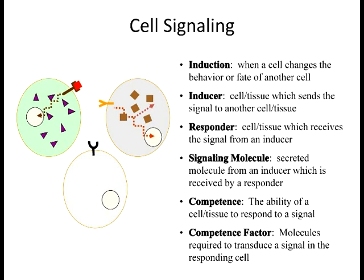Here's how it works. The inducer throws out a triangle-shaped protein, and if a cell doesn't have a receptor that will properly bind it, it doesn't respond. That's what we call non-competent. Non-competent cells cannot respond to a particular morphogen gradient or factor. Competent cells can respond. Competency is relative—if we say a cell is competent, you have to specify what it is competent to.